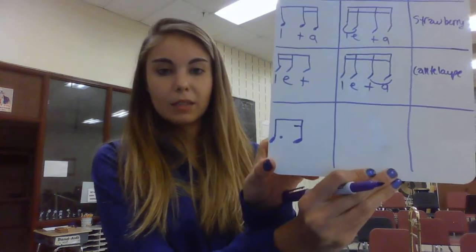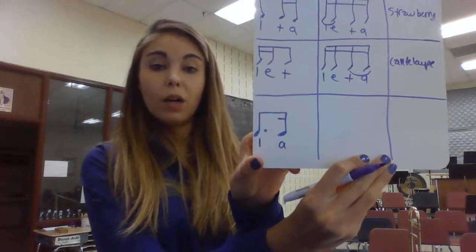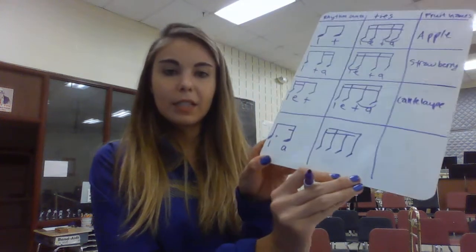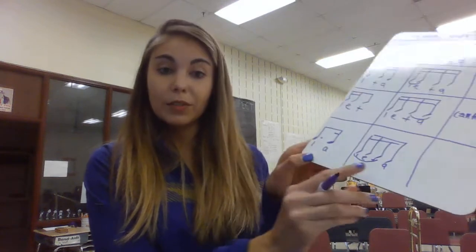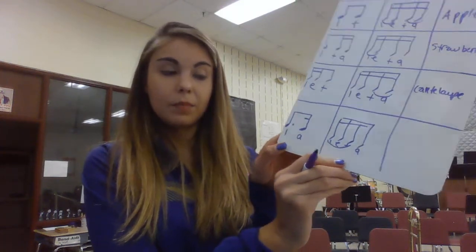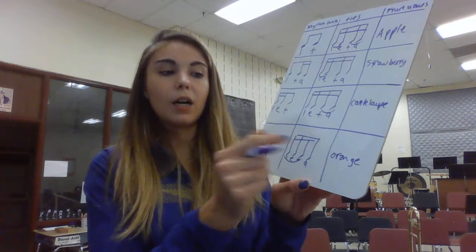Now we're going to do a dotted eighth, sixteenth rhythm. We count it: one, a. Draw your four sixteenth notes in the ties column. I know I'm saying the one and not saying anything until the a, so I have to tie not just two but three sixteenth notes together. One, e, and, a — you're holding all the way through to the and, then playing on the a. This note is even longer because there's a dot next to it. One, a. The fruit name is 'orange' — two syllables where you hold the first part a little longer. Orange — one, a.